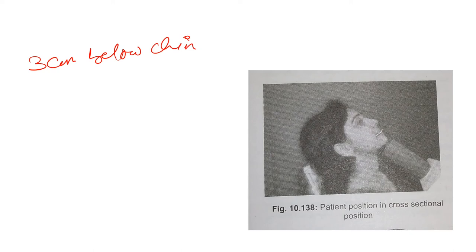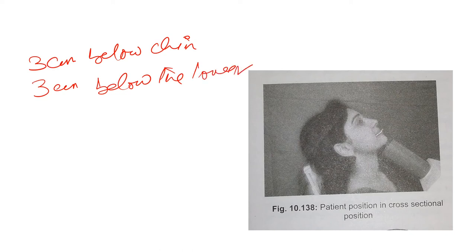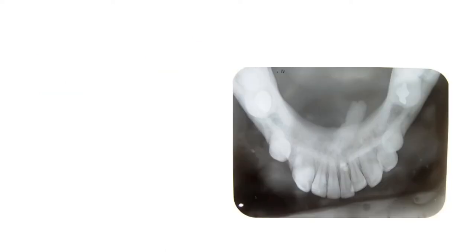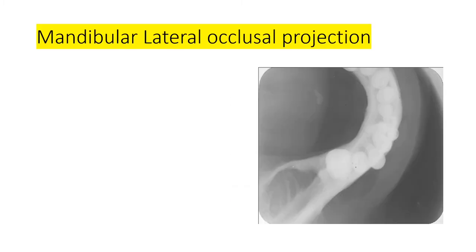The point of entry for mandibular cross-sectional projection is 3 centimeters below the chin, or 3 centimeters below the lower border of the mandible. Using this projection, a sialolith (calcified stone in the salivary duct) can be visualized.